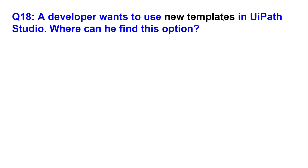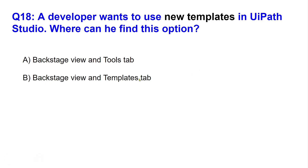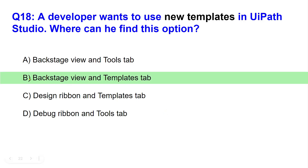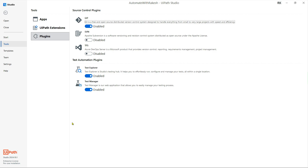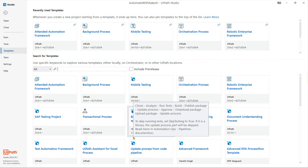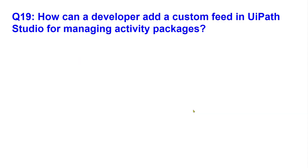A developer wants to use new templates in UiPath Studio. Where can they find the option for templates? Option A: Backstage view and tools tab. Option B: Backstage view and template tab. Option C: Design ribbon templates tab. Option D: Debug ribbon tools tab. The right answer is B - backstage view and template tab. Here I am in the backstage view of the Studio; if I hit on the templates tab, here is the option where I can search for multiple different templates readily available to use.